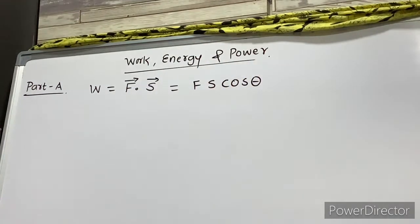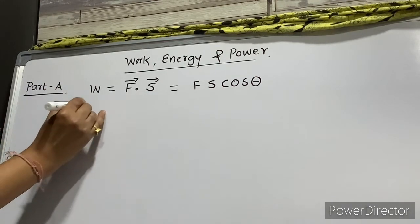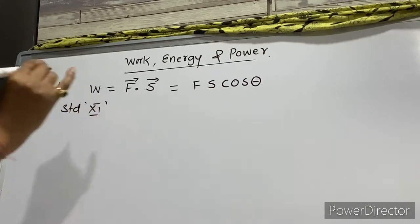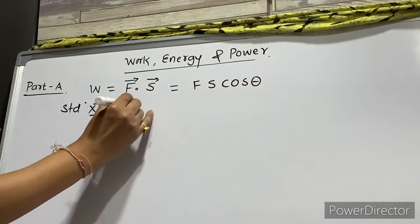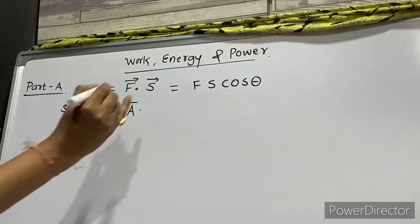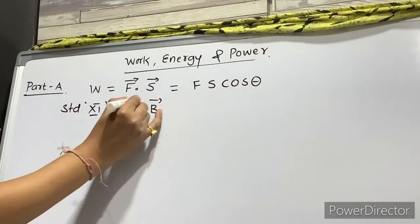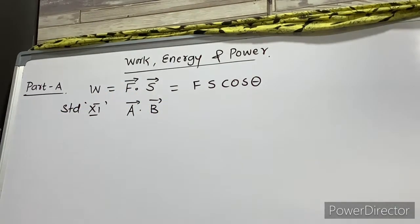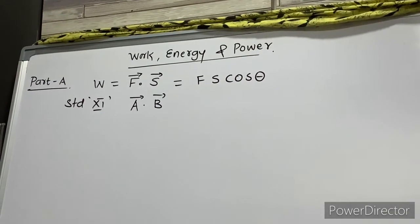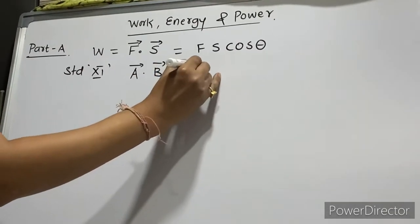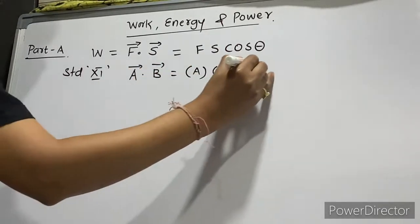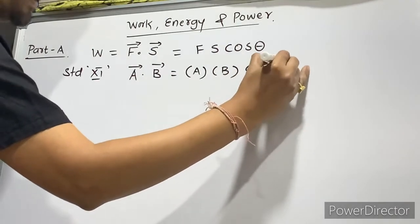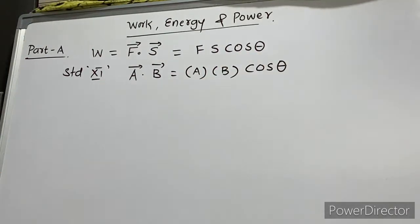Now my question is: why this cosθ? In standard 11th we have the definition of dot product. The dot or scalar product of two vectors A and B is defined as the product of the magnitudes of the two vectors and the cosine of the angle between them.